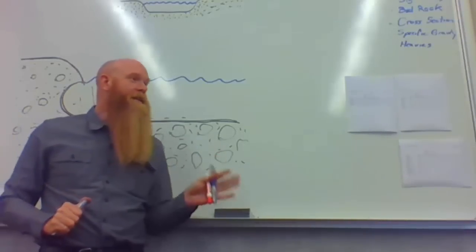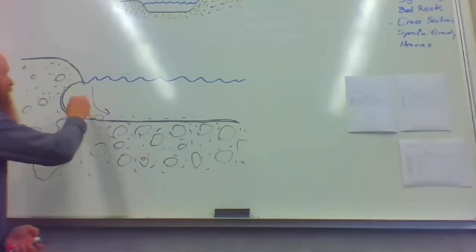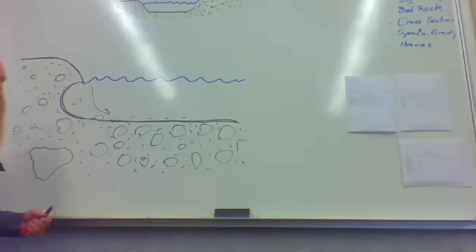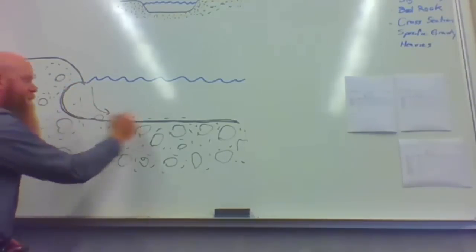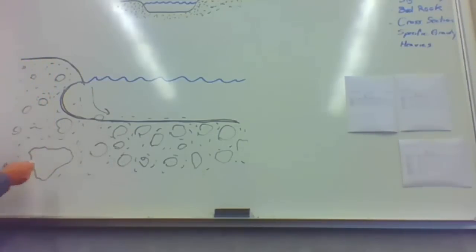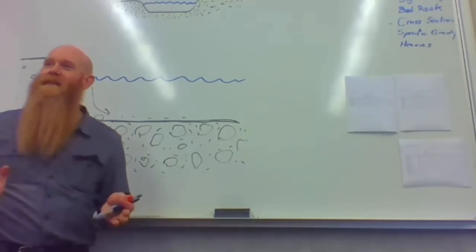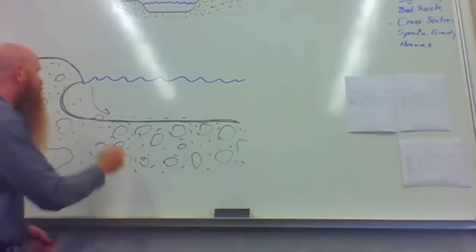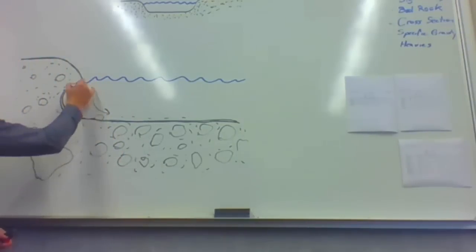This can create a neat deposit because as this material that was right there flows away and falls out into the bottom of the creek, any of the gold, little red specks I have anywhere, any of the gold that was in there doesn't necessarily wash away. What happens with all these specks of gold that were there is they all fall straight down and land in a bit of a layer right there.